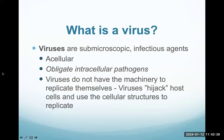Going back to our slides — viruses are obligate intracellular pathogens. A key part of what a virus is: think of them as not having the machinery or structures that allow them to replicate themselves. For a virus to make copies of itself, it actually has to hijack or take control of host cells and use the structures that are part of the host cell in order to replicate. We'll talk very much about the close relationship between viruses and their host cells, because viruses are obligated to replicate within those cells.